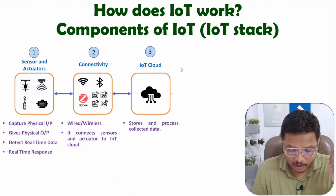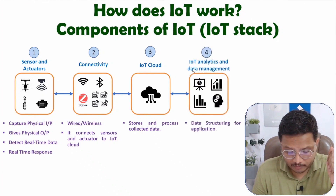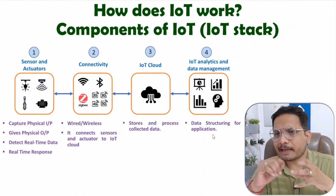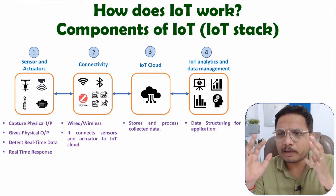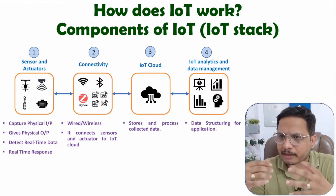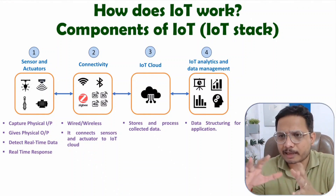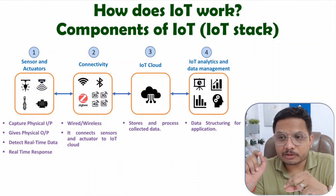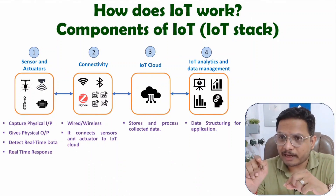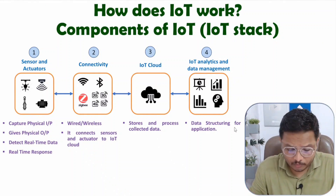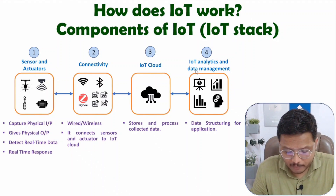The fourth IoT component is IoT analytics and data management. Here, we perform data structuring for given applications. IoT analytics and data management is a very broad branch of engineering involving algorithms, deep learning, and machine learning. Our agenda is to provide meaningful insights to the given application, and to achieve that, we have to work on the data.